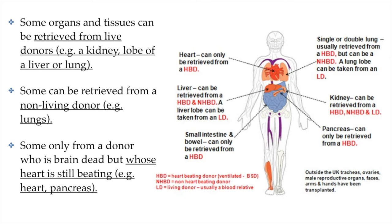Speed is of the essence, and you want to make sure that the organ gets from the donor to the patient as quickly as possible. Some organs and tissues can be retrieved from live donors — for example, kidneys. People can donate a kidney and still live a fairly normal life because we have two kidneys and can easily survive with just one. Sometimes even part of your liver can be donated. We only have one liver, but it has two sections or lobes, and a lobe can be donated. Livers are amazing because they have the capability of regrowing the parts that are removed — the donor will eventually regrow that part.